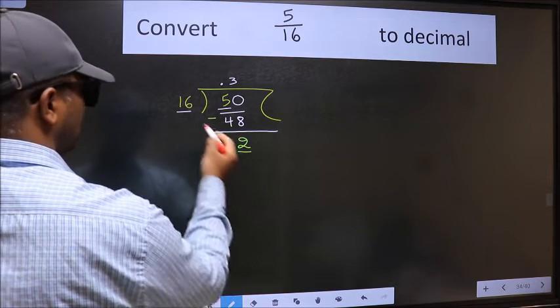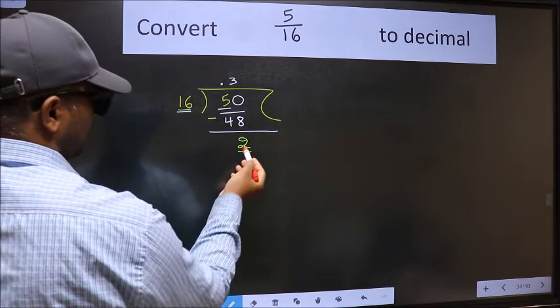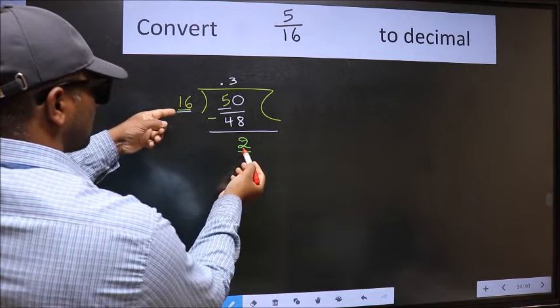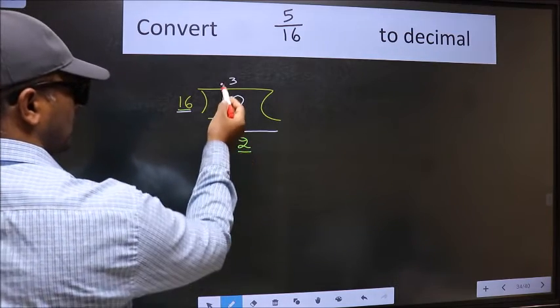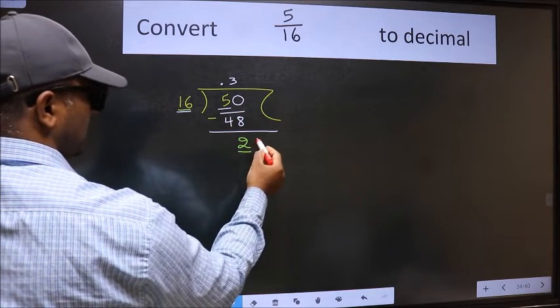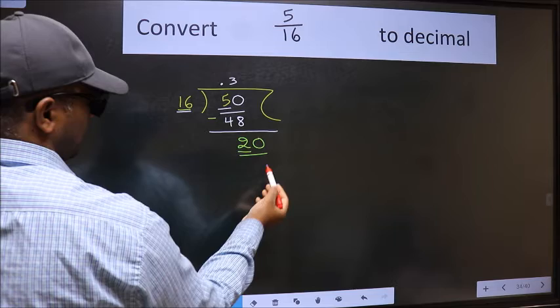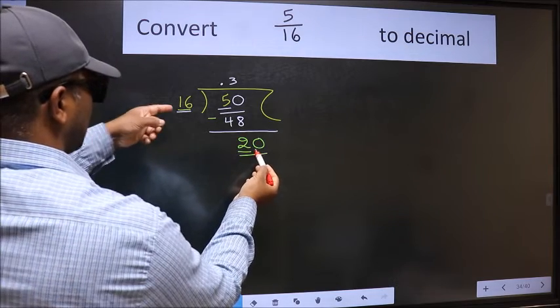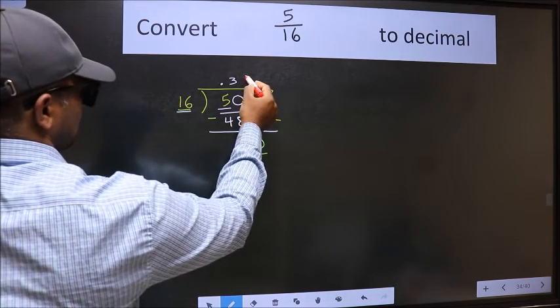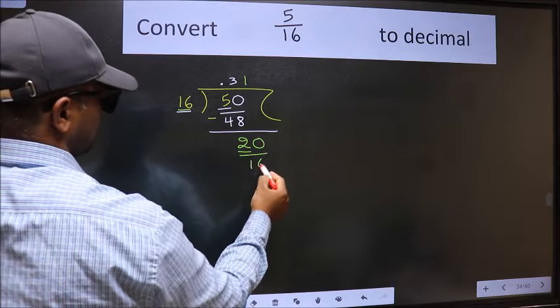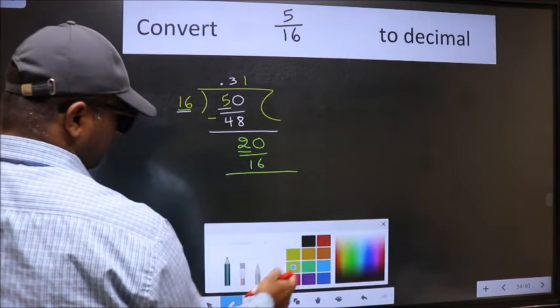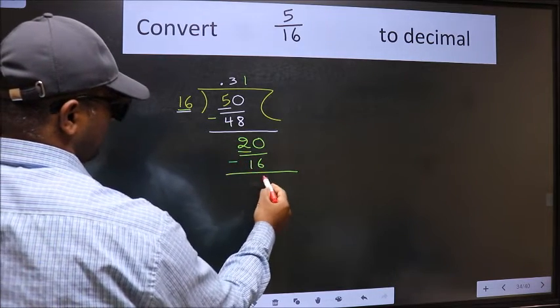Now here we have 2 and here 16. 2 is smaller than 16, and we already have the decimal. So this time we can directly take 0. So, 20. A number close to 20 in 16 table is 16 once 16. Now we should subtract. We get 4.